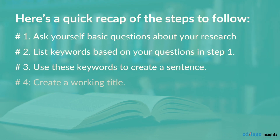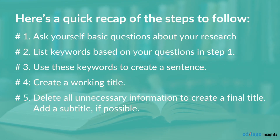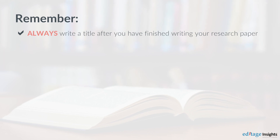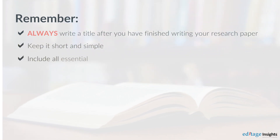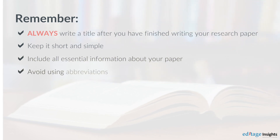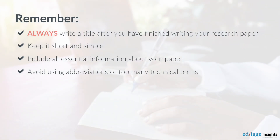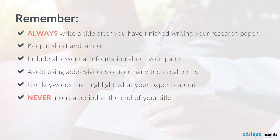Let's do a quick recap. Remember: always write a title after you've finished writing your research paper. Keep it short and simple. Include all essential information about your paper. Avoid using abbreviations or too many technical terms. Use keywords that highlight what your paper is about. Never insert a period at the end of your title.